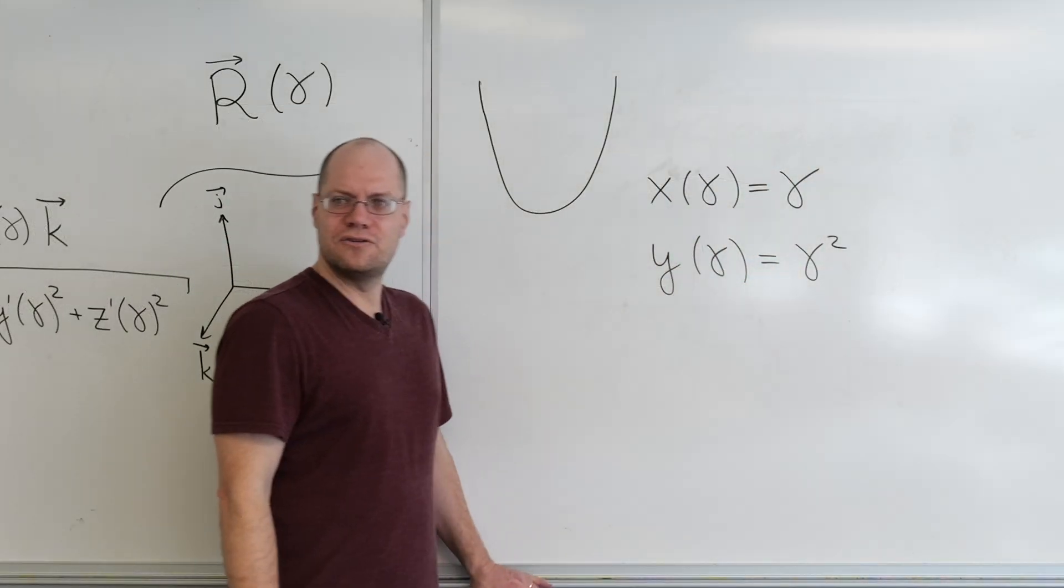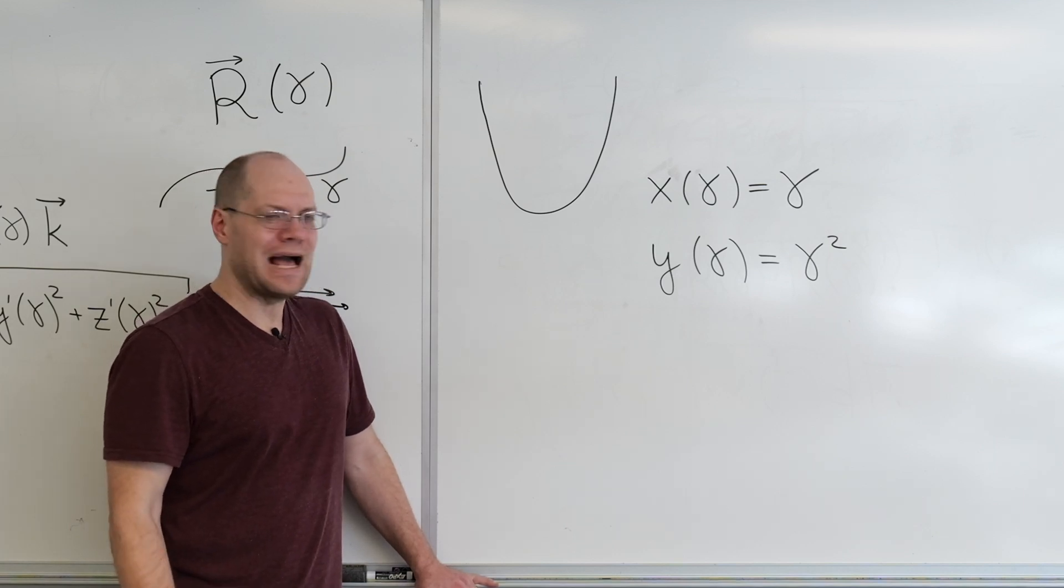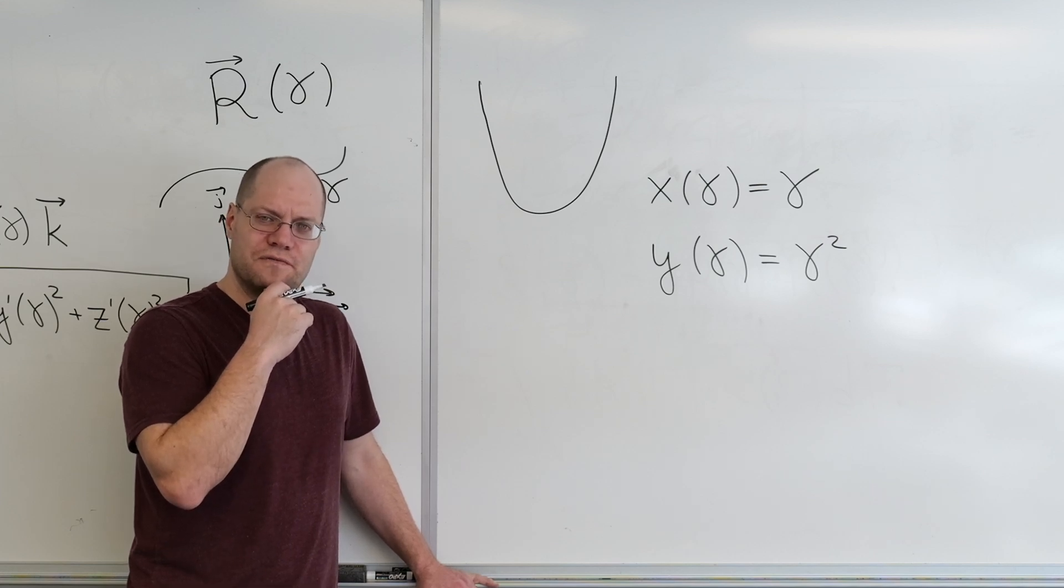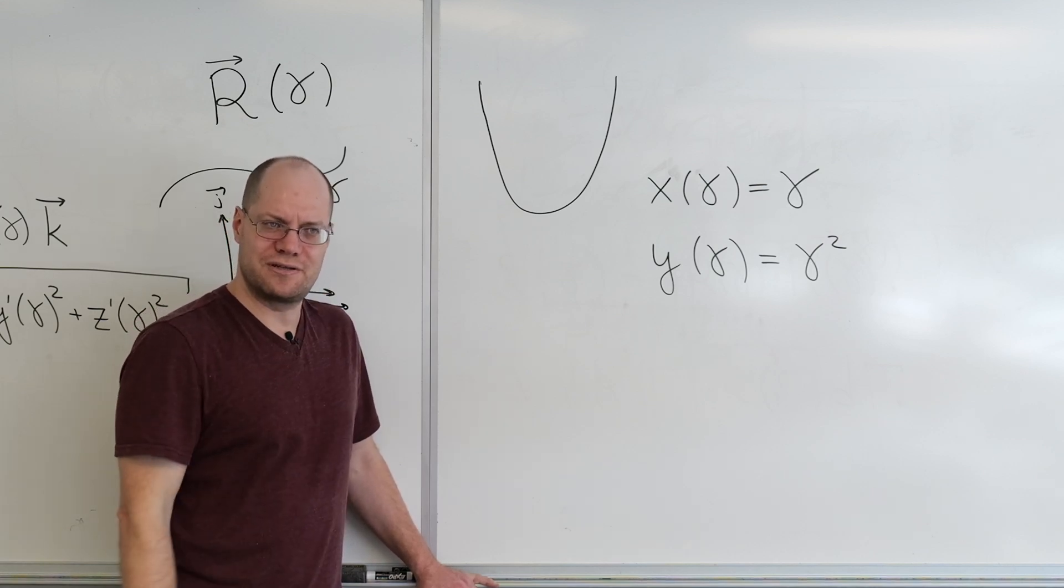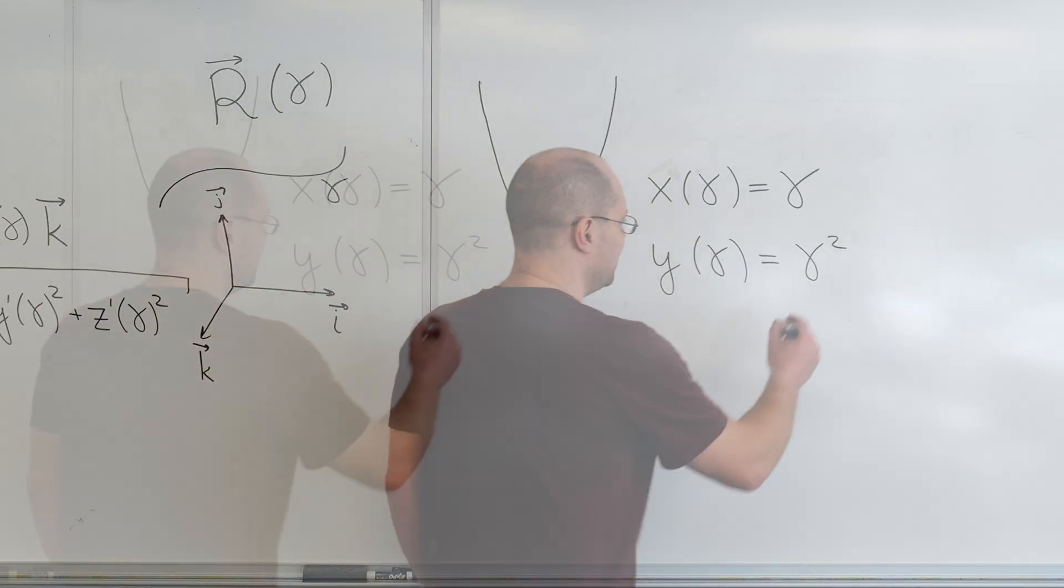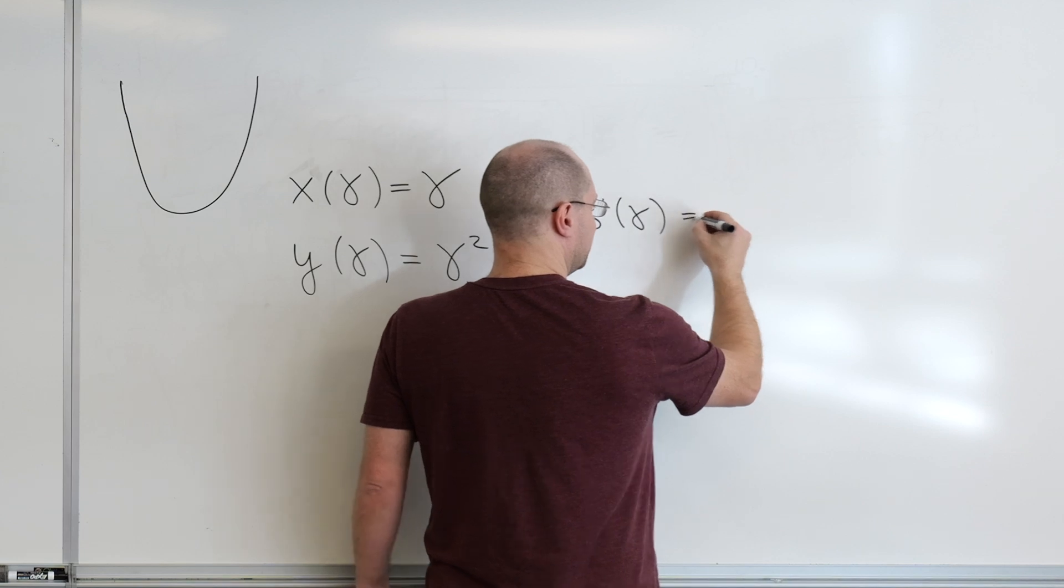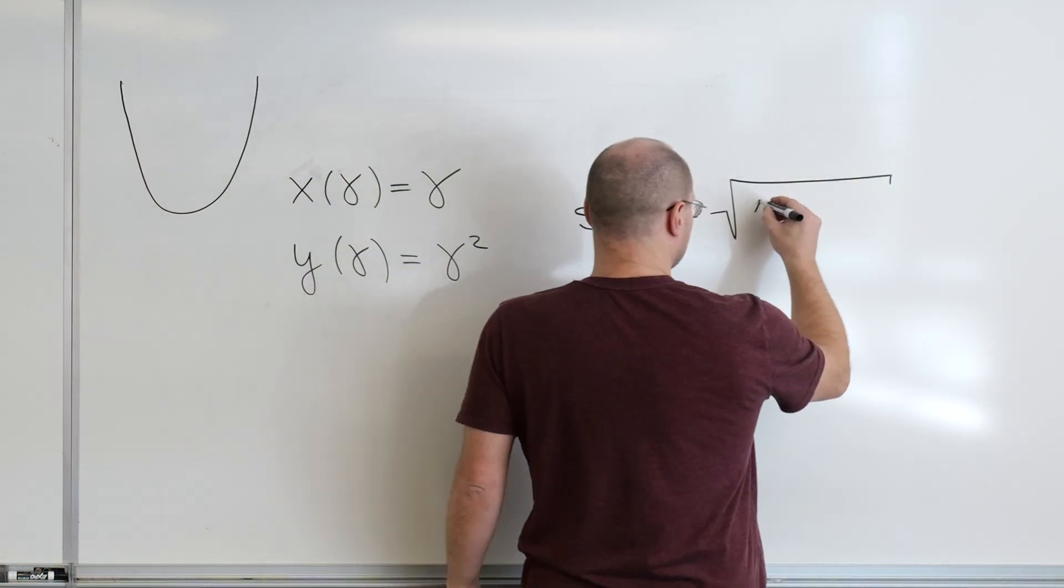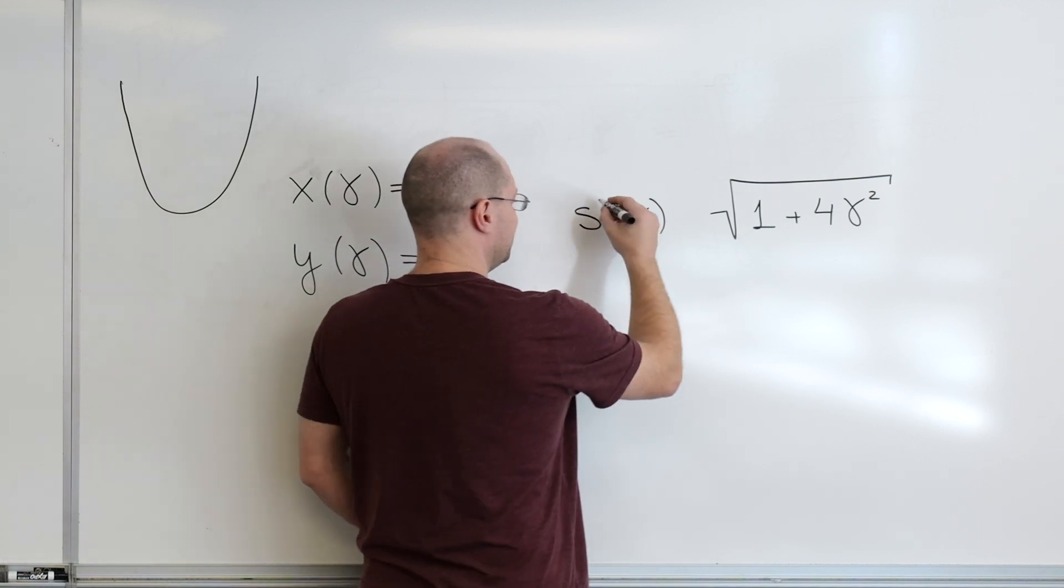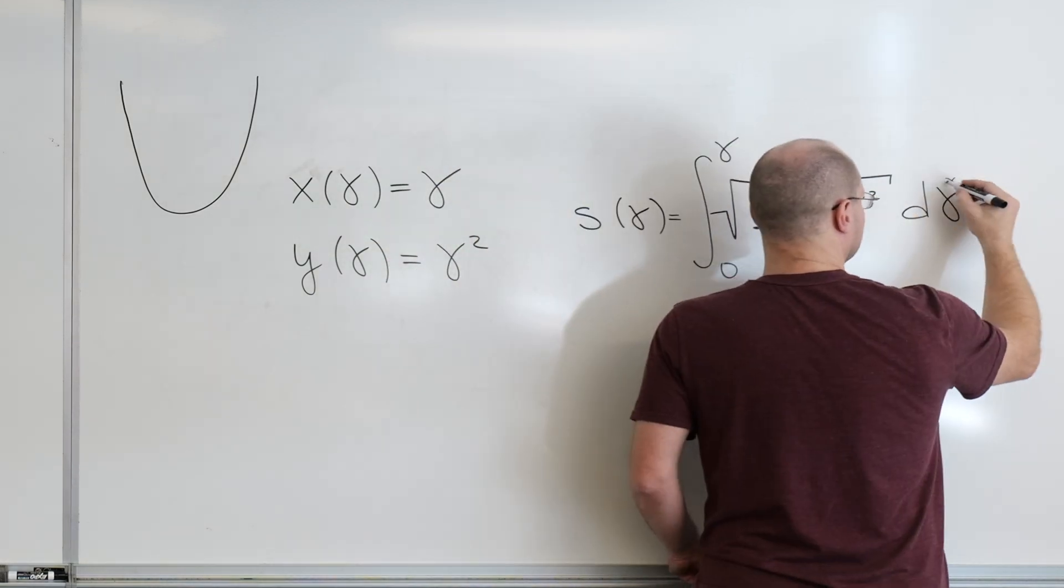That's the only two curves that will work out simply. I will think very hard today and tomorrow of another curve that works out simply so you can do it on the final. But I don't know of another curve right now. So then S of gamma, S prime of gamma equals... That means that S of gamma itself.